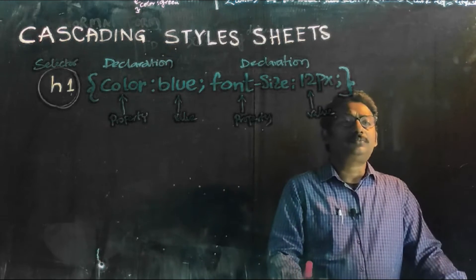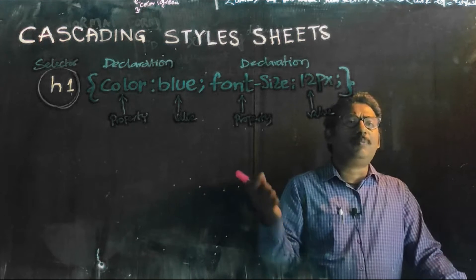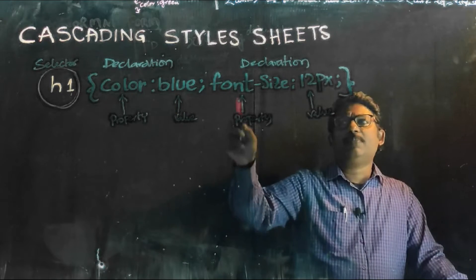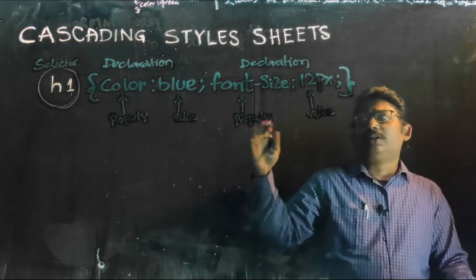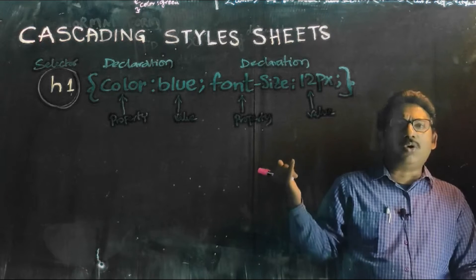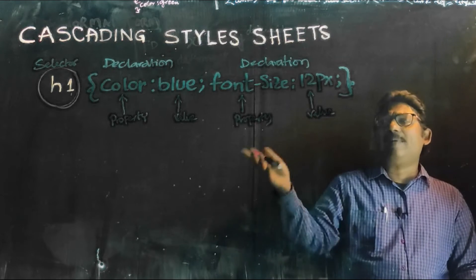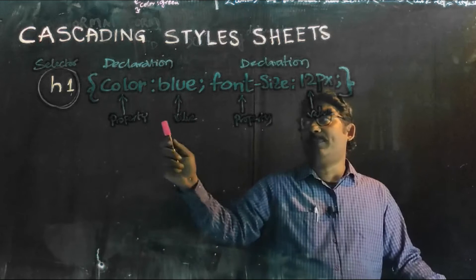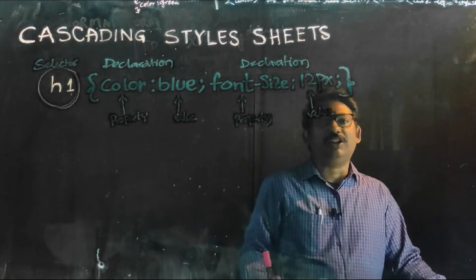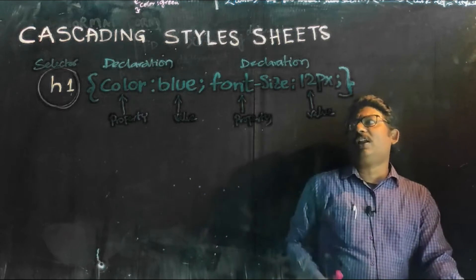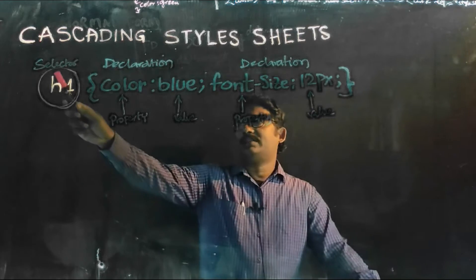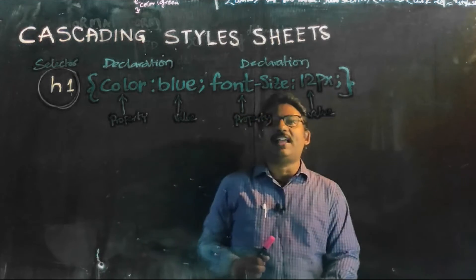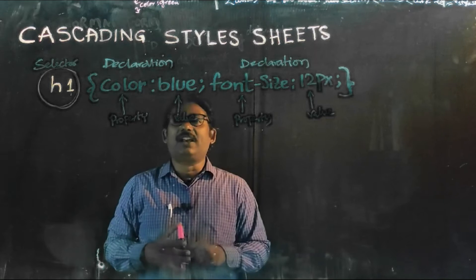When you are doing VB++ or VC++, there will be a property and the value for the property. In the same way, here also, the property is color, and the other property is font size. So instead of writing a separate tag for color and a tag for font size, we are combinedly giving these two declarations for one particular selector, that is h1. So the syntax of this cascading style sheet is: selector h1, opening braces, declaration, declaration, and closing braces. In a declaration, the property is given, then colon, then value and semicolon.